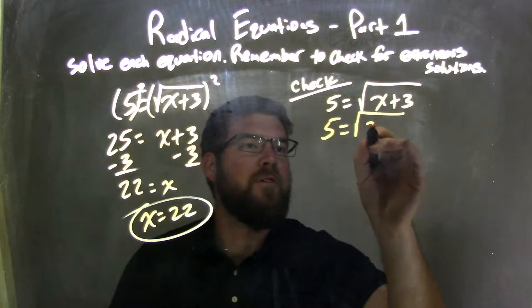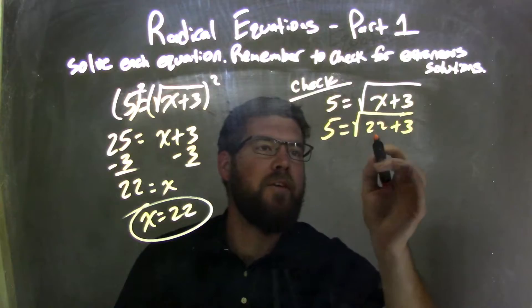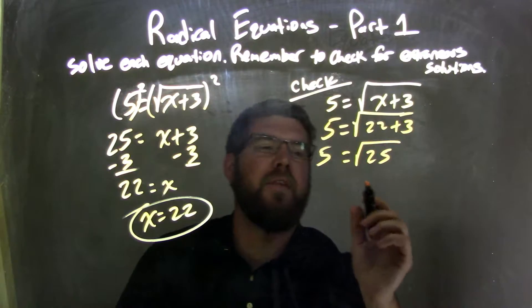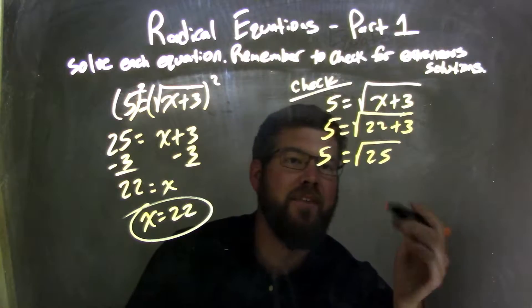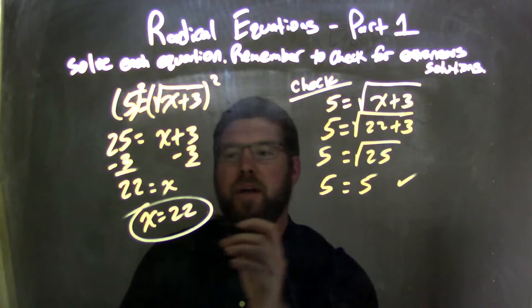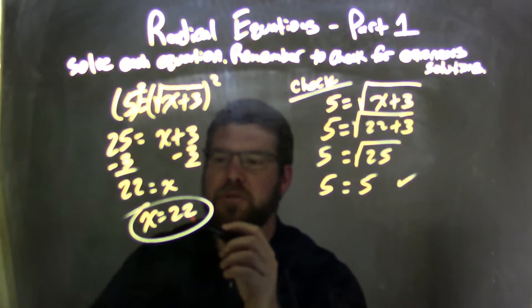So, 5 equals the square root of 22 plus 3. Let's simplify this. 22 plus 3 inside the square root is 25. 5 is on the outside. Square root of 25 is just 5. They're equal, we're good. That means 22 was my answer, my real solution here.